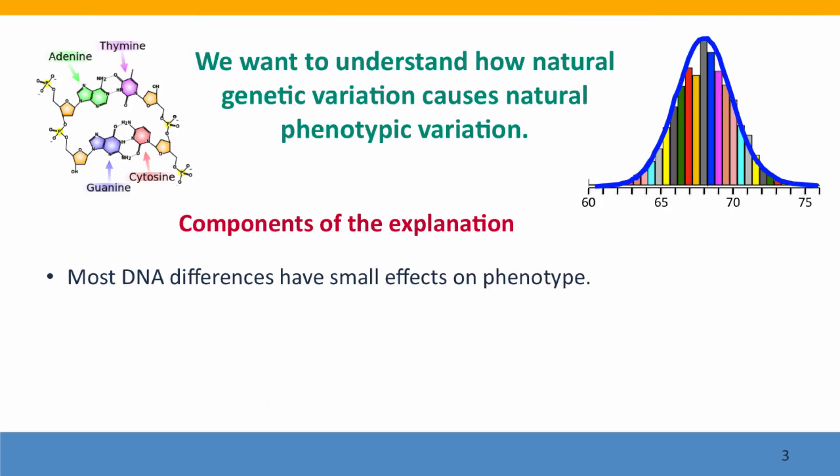Our goal is to understand how natural genetic variation, which is intrinsically quantized — a base is either an A, or a G, or a C, or a T — causes smoothly varying phenotypic variation in all of the phenotypes that we see around us. A big component of the explanation is that most DNA differences aren't like the DNA differences you learn about in a genetics textbook. Instead, most DNA differences have only small effects on phenotype.